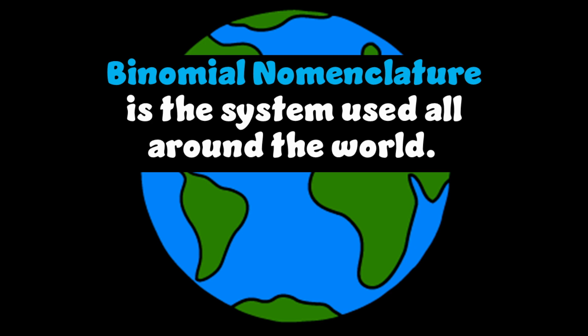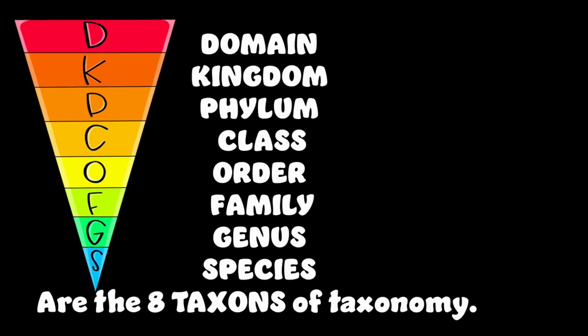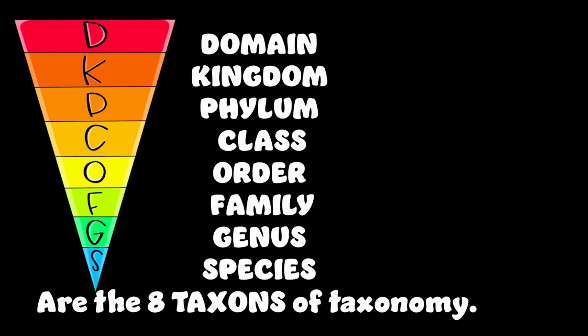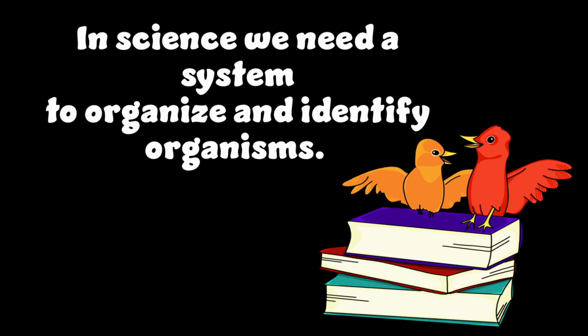Domain, Kingdom, Phylum, Class, Order, Family, Genus, Species — these are the eight taxons of taxonomy.